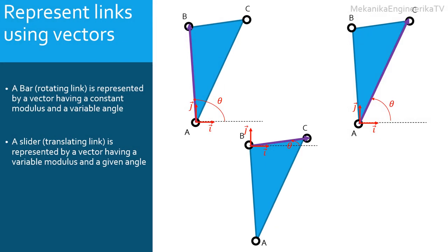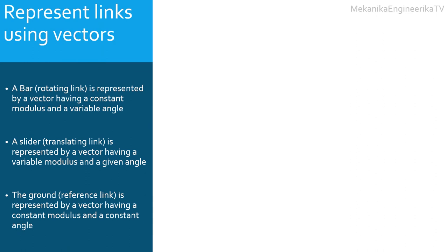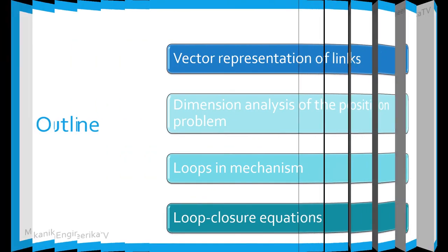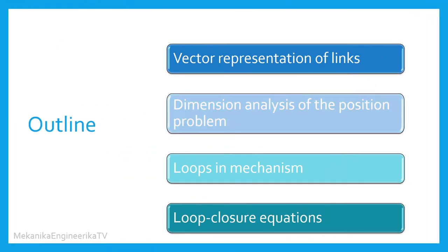The position of a ternary link can be defined by any vector connecting two revolute joints — it can be the vector AB, or AC, or BC. One can move from one vector to another knowing the triangle angles. The vector position of a ternary link has a constant modulus and a variable angle. Any vector that has a constant modulus and a constant angle can be assimilated to a vector position of the ground. We have finished the first part dealing with vector representation of bars, sliders, ternary links, and the ground.